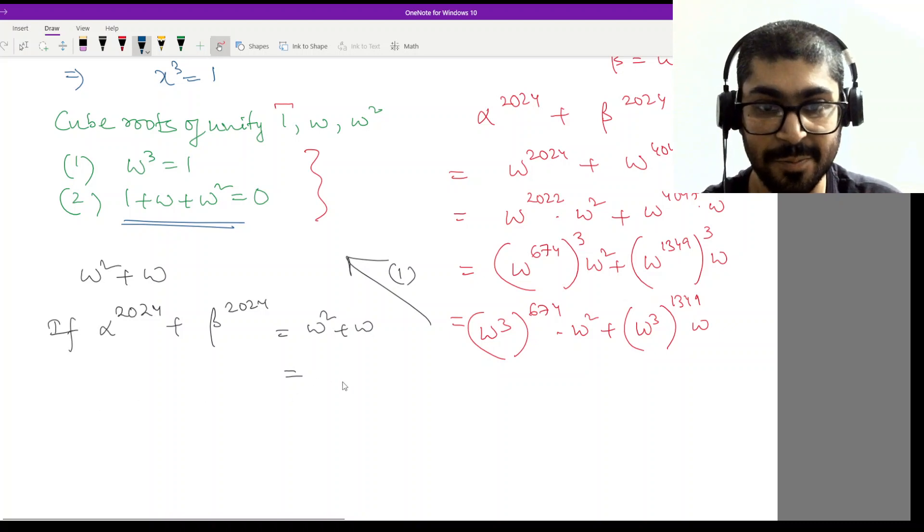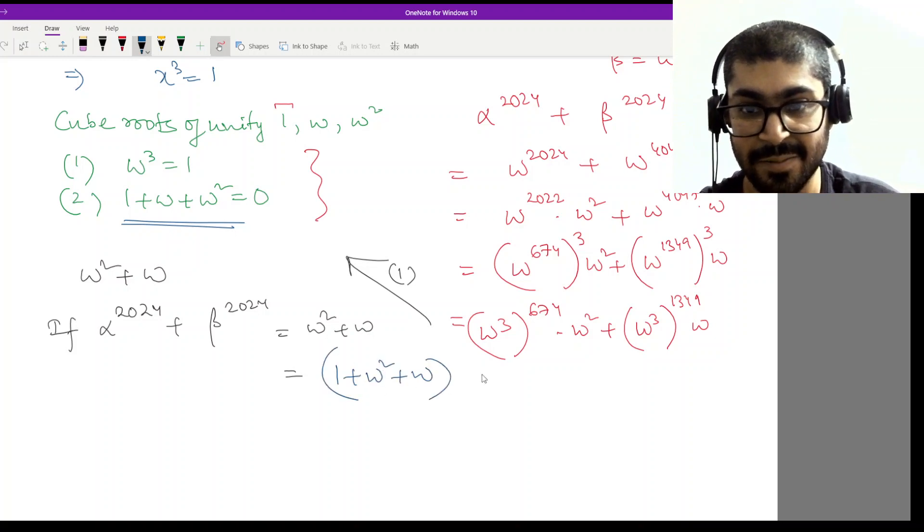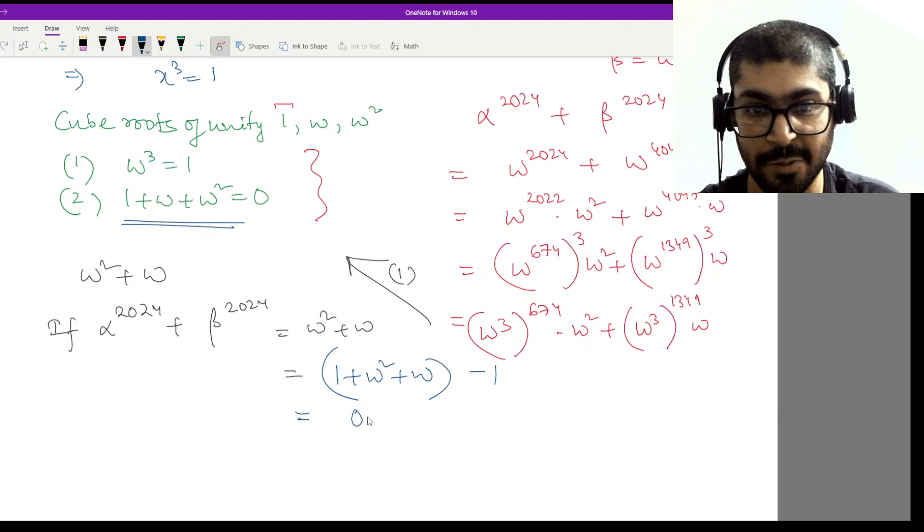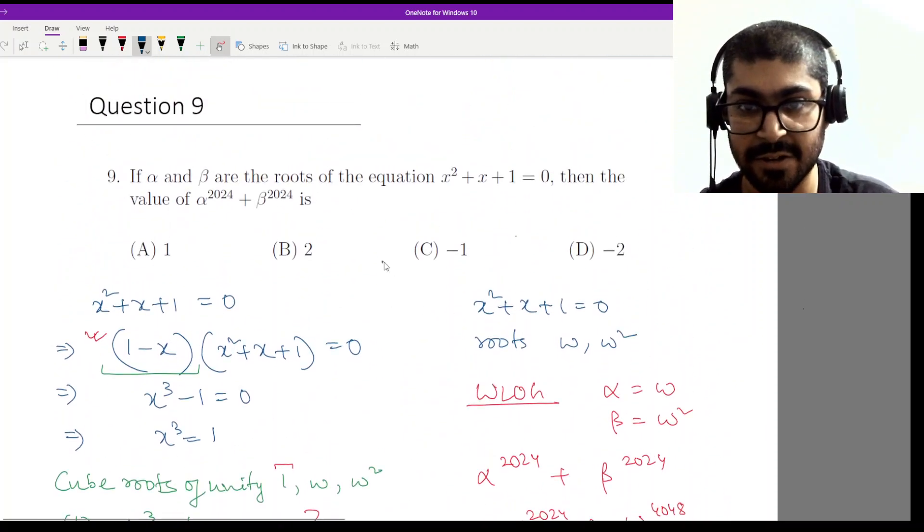So we had one, or let us just write it a bit fashionably. So we have one plus omega square plus omega minus 1. That'll do. So 0 minus 1 equal to minus 1. So the answer will be minus 1. And minus 1 is in option C.